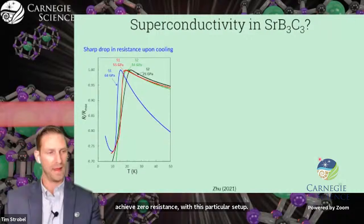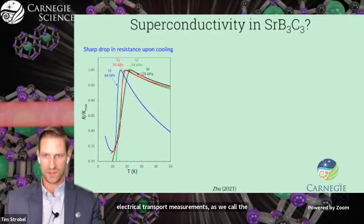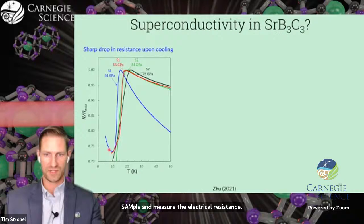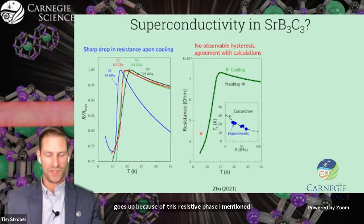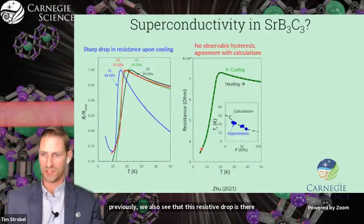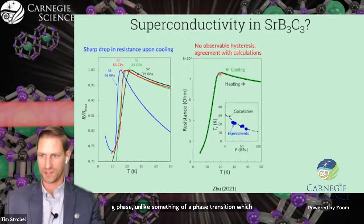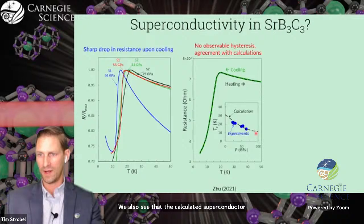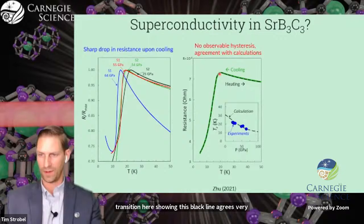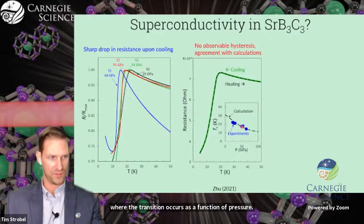Nevertheless, we can recover these samples and make electrical transport measurements. As we cool the sample and measure the electrical resistance, we can see at some critical temperature, we see a sharp drop in resistance. We also see that this resistive drop has no hysteresis upon cooling or heating, which is exactly what we would expect for a superconducting phase. The calculated superconducting transition agrees very well with our experimental measurements.